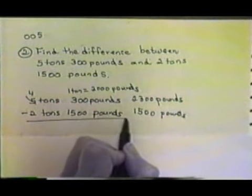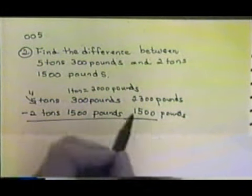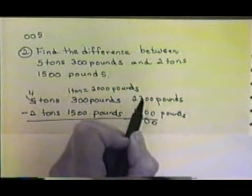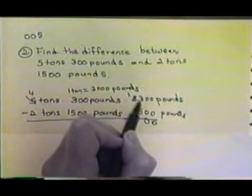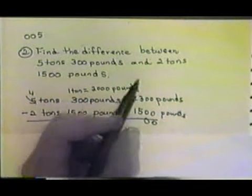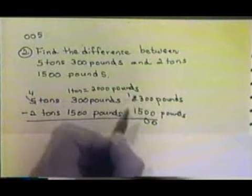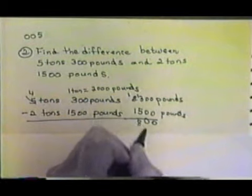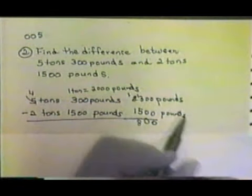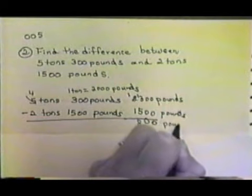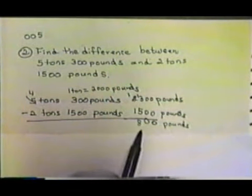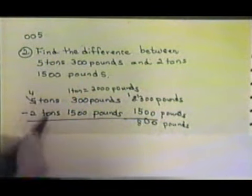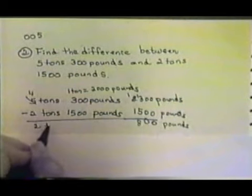Now we're ready to subtract. 0 from 0 leaves 0, 0 from 0 leaves 0. 5 from 3 — we can't do it, so we have to borrow. Since we're working with pounds, we can just put our 1 up here. 5 from 13 leaves 8, and 1 from 1 leaves 0, so we have 800 pounds. Now we can't forget to subtract our tons: 2 tons from 4 tons leaves 2 tons. So the answer is 2 tons, 800 pounds.